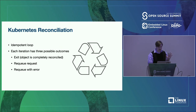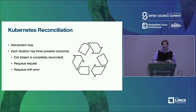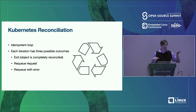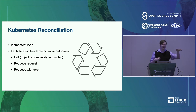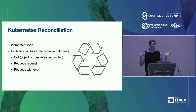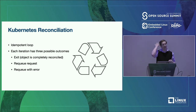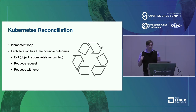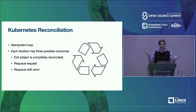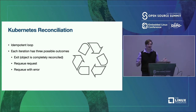Now let's talk about reconciliation again. The reconciliation of a single controller is implemented as an idempotent loop. This means the loop runs over and over again based on the current desired state in the etcd store. It needs to be idempotent, meaning that given a single specific requested state, I should be able to run this loop an arbitrary number of times — a hundred, a thousand, a million — and it should always converge towards a single desired end state as defined by what the user requested.